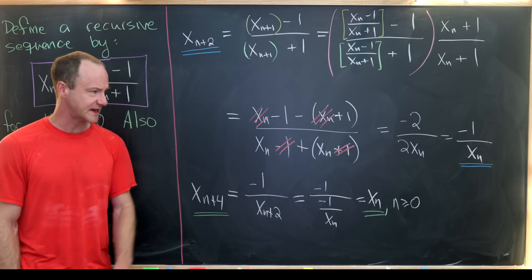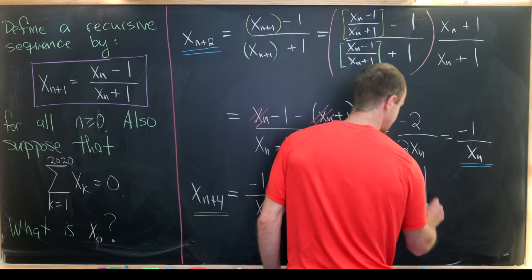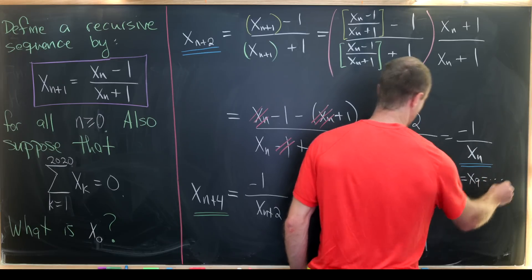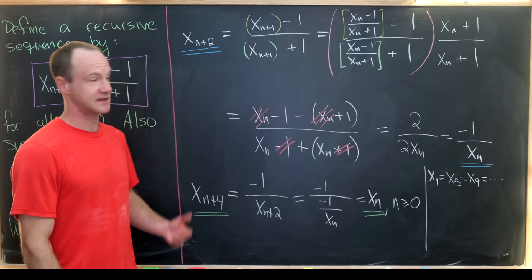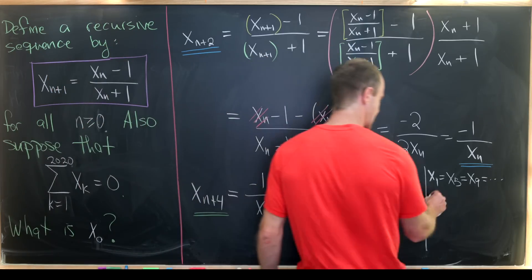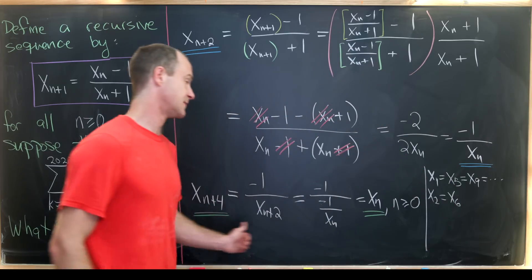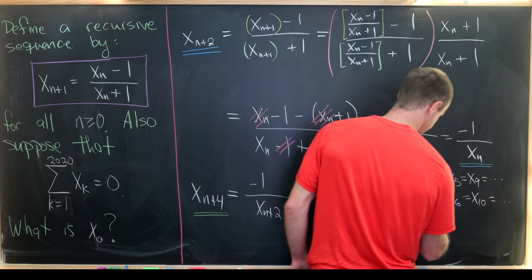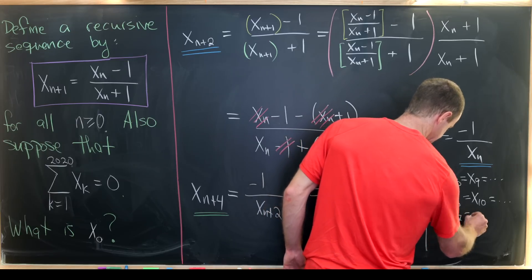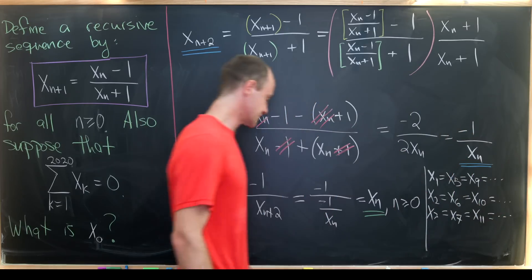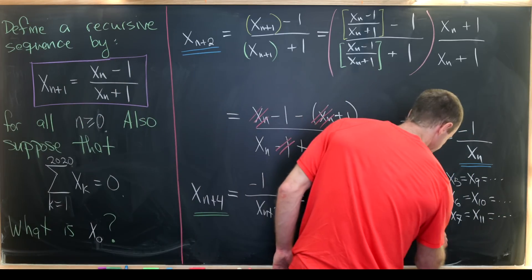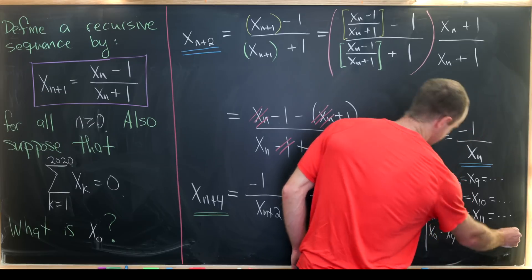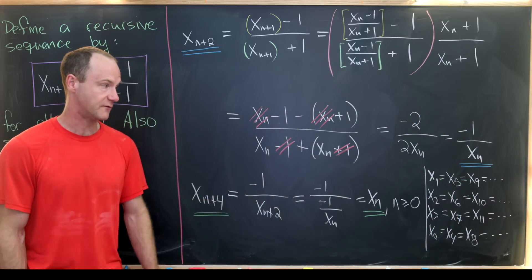This means we only have four types of terms to work with. Terms like x_1, x_5, x_9, … are all equal to x_1. Terms like x_2, x_6, x_10, … are all equal to x_2. Terms like x_3, x_7, x_11, … are all x_3. And terms like x_0, x_4, x_8, … are all equal to x_0. That covers all values of the sequence.